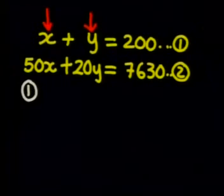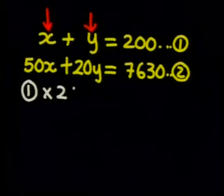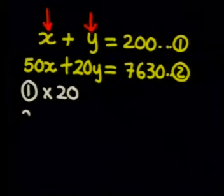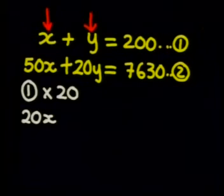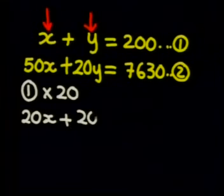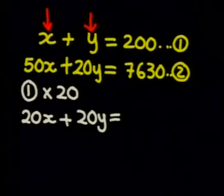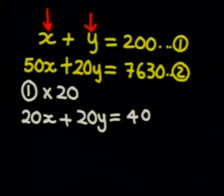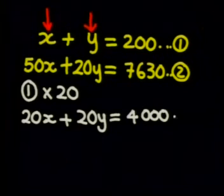So I want to multiply equation 1 by 20. I get 20X plus 20Y is equal to 4,000. That is equation 3.